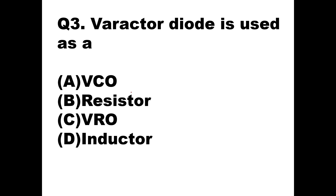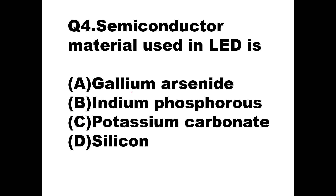Question number three: the varactor diode, that is variable capacitor diode, is used as what? By varying the capacitor we can vary the frequency, so we are speaking about an oscillator. The variable capacitor diode can be used as a voltage controlled oscillator, VCO. VCO is the right answer because you can vary the capacitance and vary the frequency of the VCO.